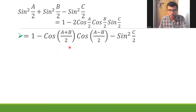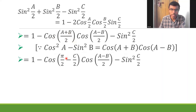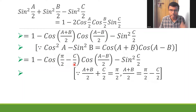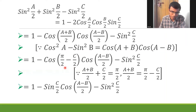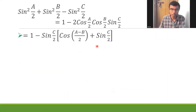Now, from our condition, a+b/2 = π/2 - c/2. So cos((a+b)/2) = cos(π/2 - c/2) = sin(c/2). This gives us 1 - sin(c/2)·cos((a-b)/2) - sin²(c/2). Now I can take -sin(c/2) common from the last two terms, leaving: 1 - sin(c/2)·[cos((a-b)/2) + sin(c/2)].